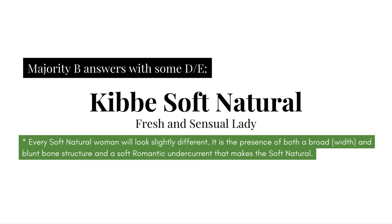Before we discuss the soft natural body type, a quick note: I'll be using some celebrity examples to better convey how the soft natural body type manifests. However, every soft natural woman will look slightly different. What makes a soft natural is the presence of both a broad and blunt bone structure — the Kibbe width — as well as a soft romantic undercurrent. So don't fixate on any specific characteristic.